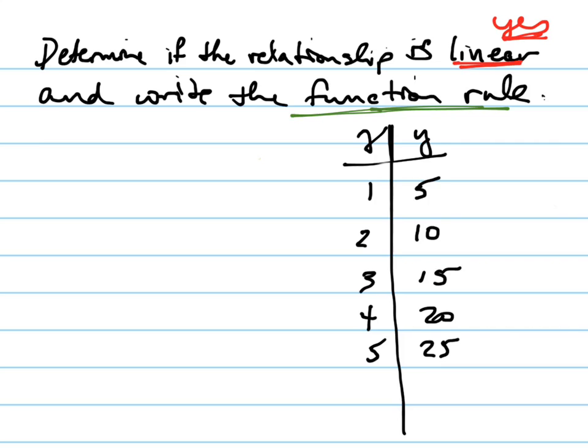So how do we write a function rule? Function rules are always in the form, whenever it's linear, it's always going to be m, that's your constant rate of change, times x, plus b. This is your starting point. That means when x equals zero.